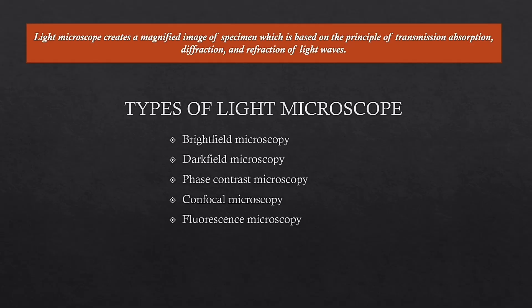There are two types of microscopes: light microscope and electron microscope. A light microscope creates a magnified image of a specimen based on the principles of transmission, absorption, diffraction, and refraction of light waves. It is a simple microscope that produces a magnified image using these principles.